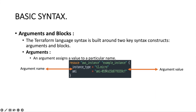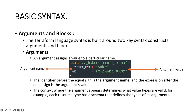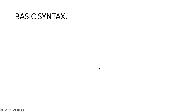On the right-hand side, whatever we have, that's the argument value. Whenever we are defining the resource block or provider block, we make use of these arguments to define the key and value. The identifier before the equals sign we call the argument name, and the expression after the equals sign we call the argument value. The context where this argument appears depends on your resource type.